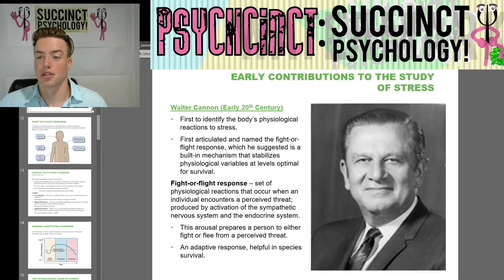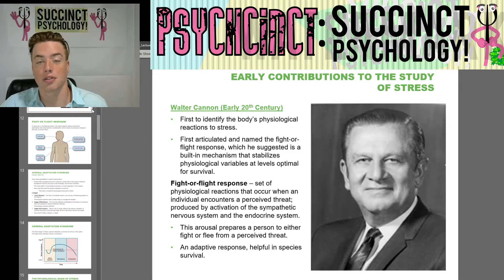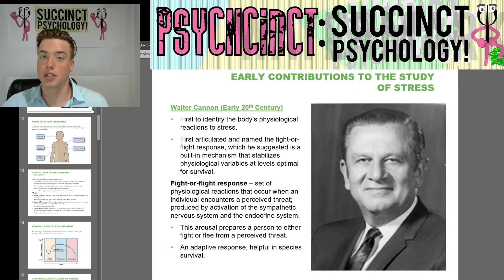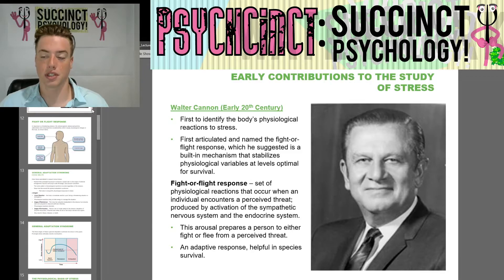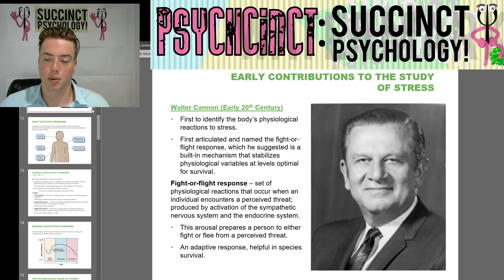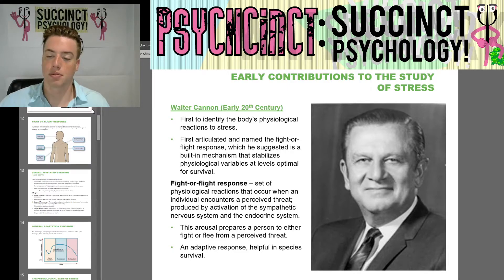Early contributions to the study of stress: Walter Cannon in the early 20th century was the first to identify the body's physiological reactions to stress. He first articulated and named the fight-or-flight response, which he suggested is a built-in mechanism that stabilizes physiological variables at levels optimal for survival. The fight-or-flight response is a set of physiological reactions that occur when an individual encounters a perceived threat, produced by activation of the sympathetic nervous system and the endocrine system, preparing a person to either fight or flee — an adaptive response helpful in species survival.